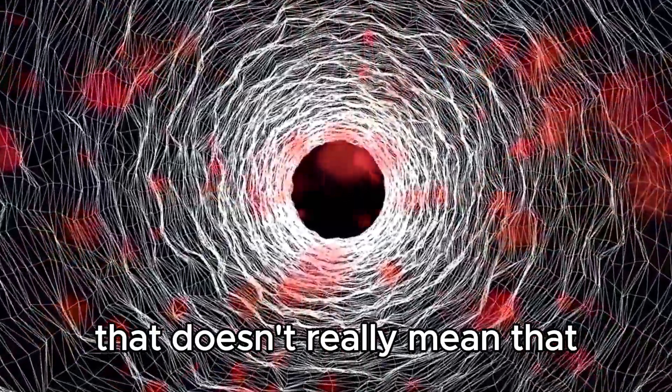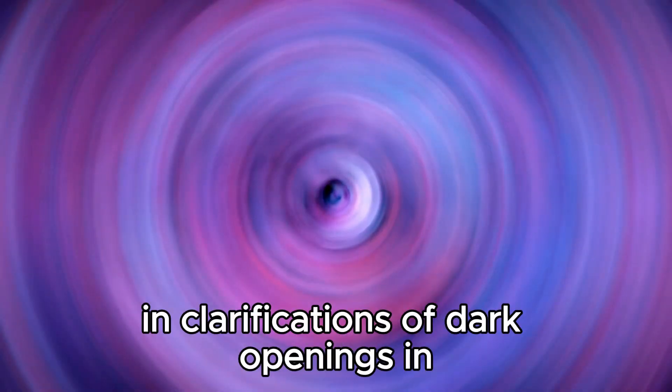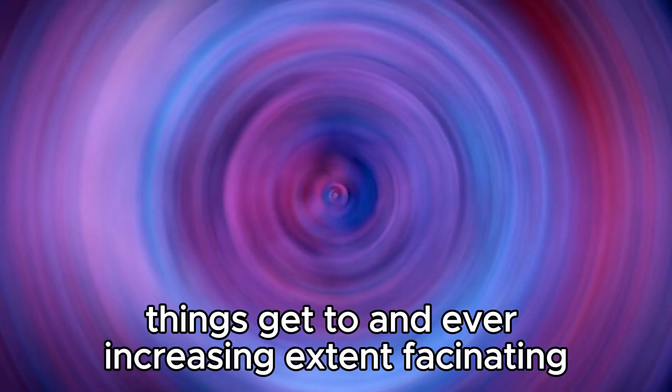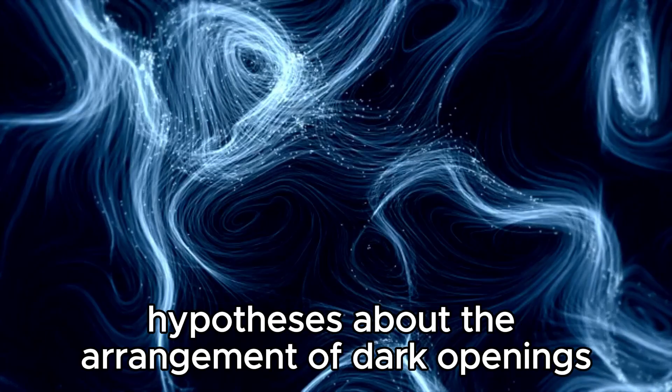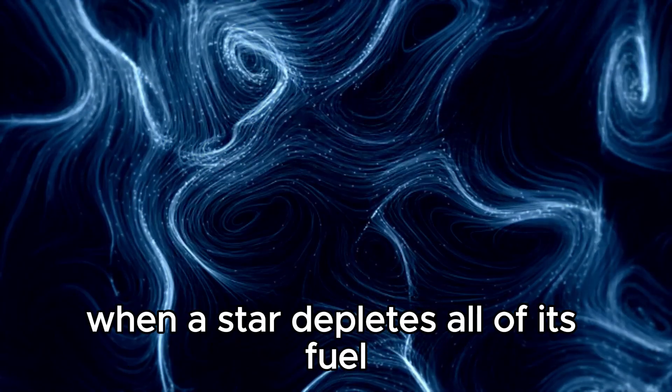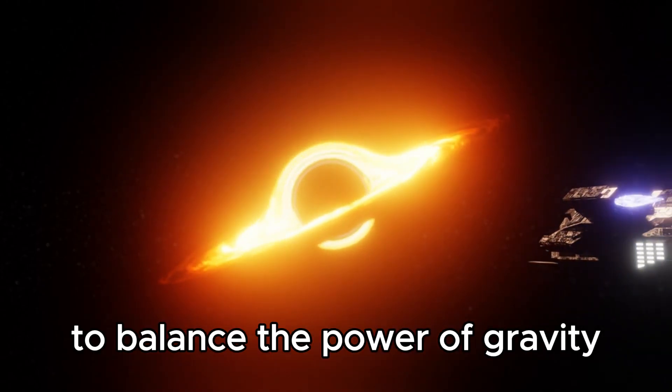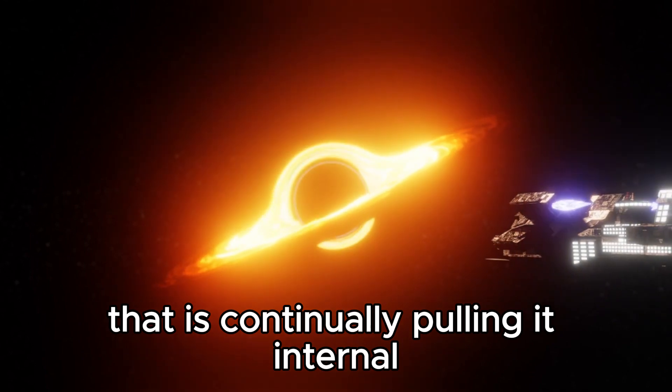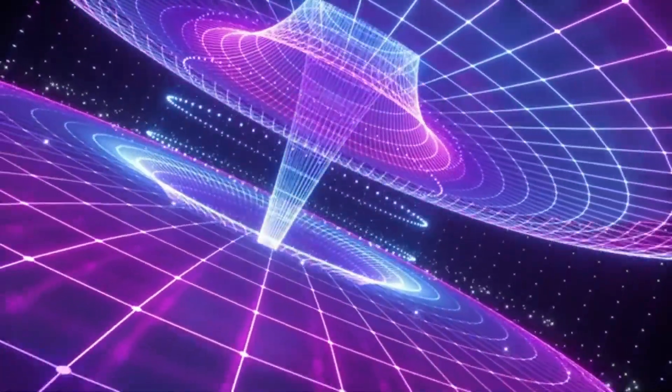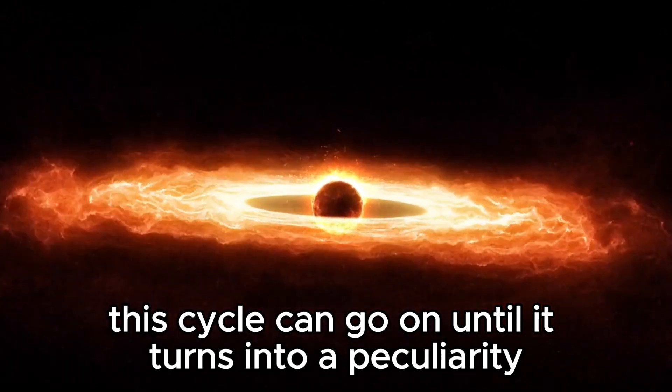That doesn't really mean that the researchers haven't been occupied. One of the most convincing hypotheses about the arrangement of black holes is that they are made from collapsed stars. When a star depletes all of its fuel, it can never again deliver enough energy to balance the force of gravity that is continually pulling it inward. The star begins to break down on itself, becoming smaller and denser.